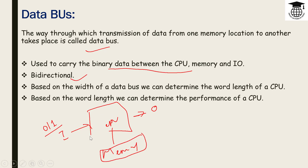The data bus is bidirectional — data can flow to or from memory. Based on the word length, we can determine the performance of a CPU. Based on the width of the data bus, we can determine the word length of a CPU — it may be 16-bit, 32-bit, or 64-bit.